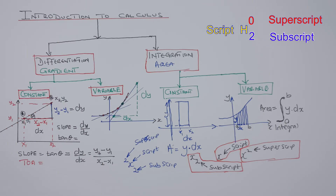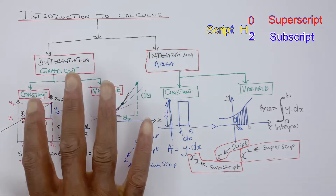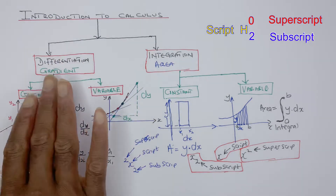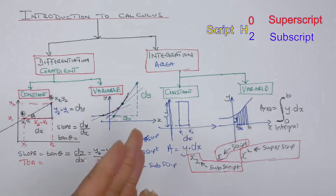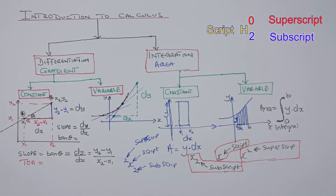So those terms are really important. Calculus deals with gradient and area. We call the gradient-finding process differentiation, and we call the area-finding process integration. There are two types of gradients: constant gradient, which is uniform, and variable gradient, which is changing. For area, you can have a constant area and a variable area.